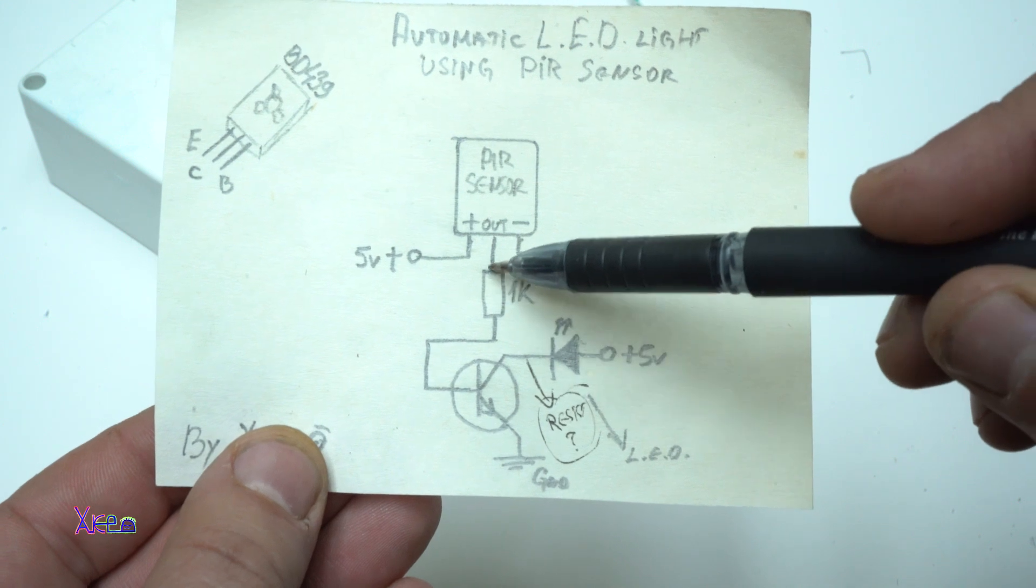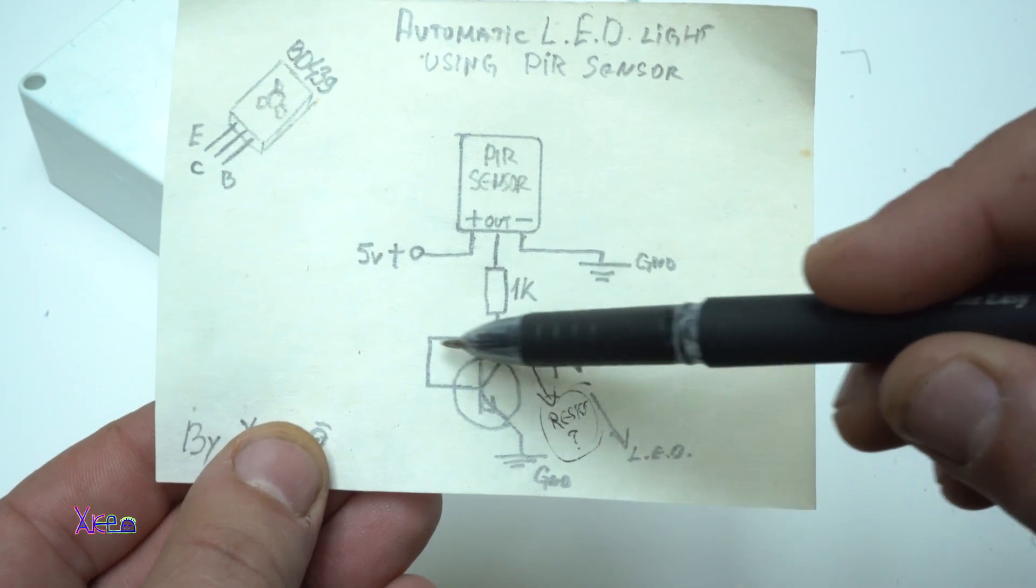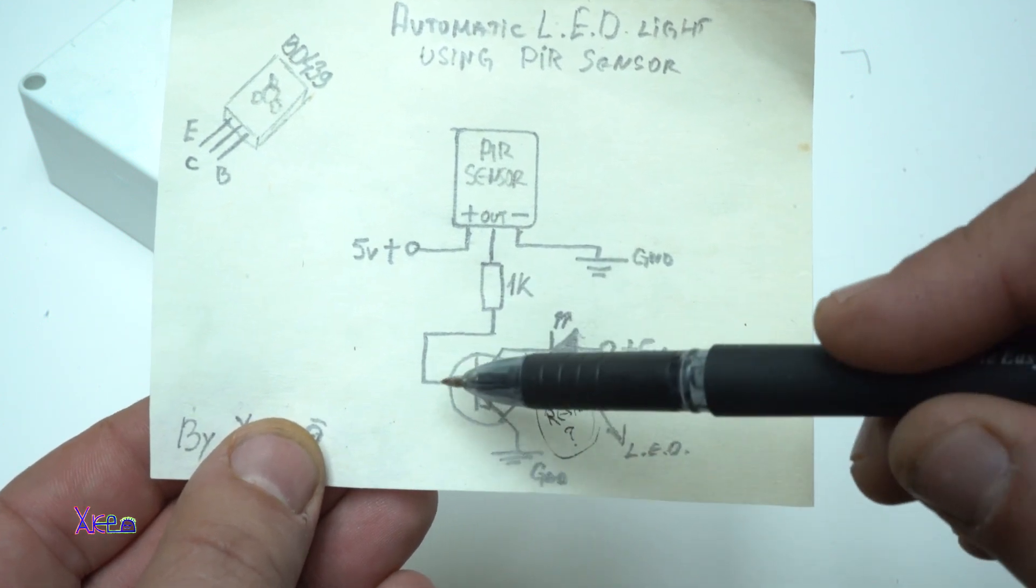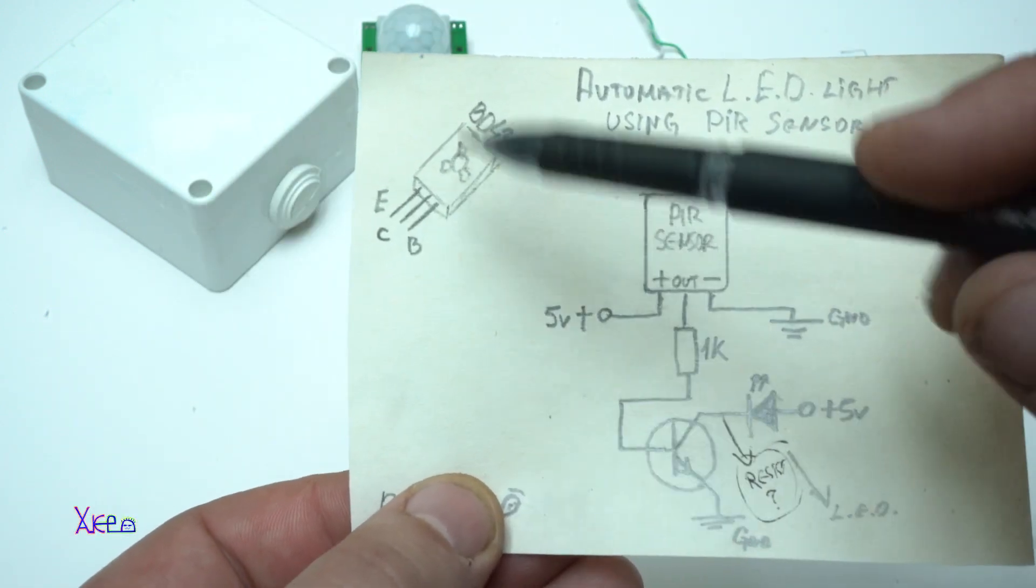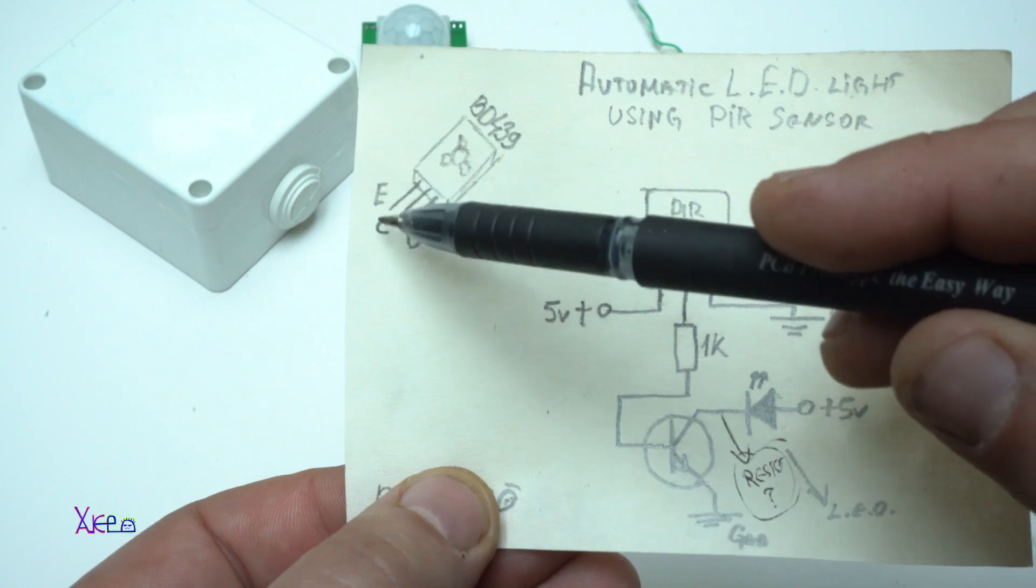From here goes to one kilo ohm resistor that will be connected on base of the transistor, which is BD439. The pins are emitter, collector, base.